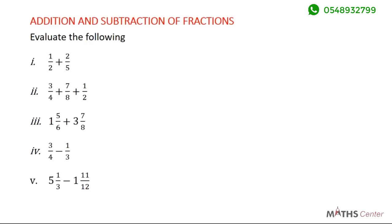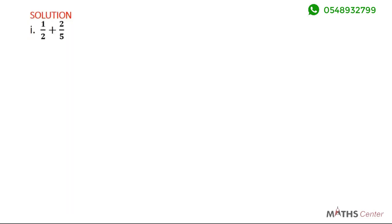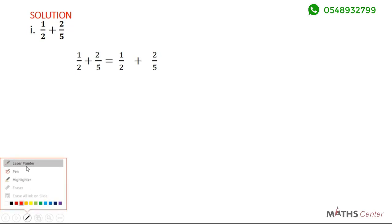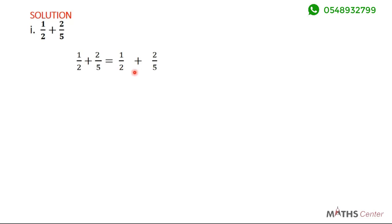We have been told to evaluate the following, and we have been given some fractions to add and subtract. Let's pick some examples and see how this is done. We have been told to add 1 over 2 to 2 over 5. Whenever you have a fraction like this, the first thing that you have to do is to find the least common multiple of the denominators. The denominators here are 2 and 5, so you find the LCM of 2 and 5, which is 10.